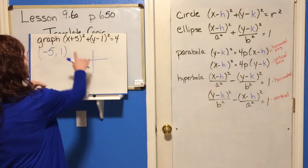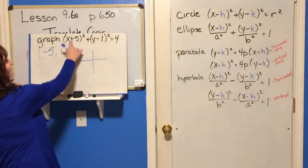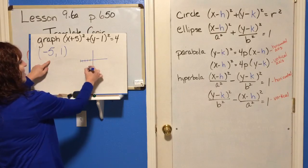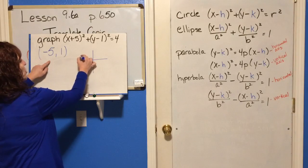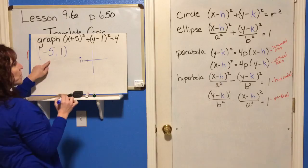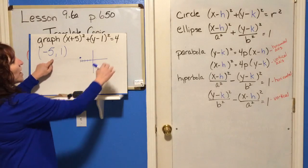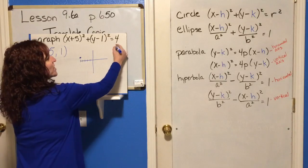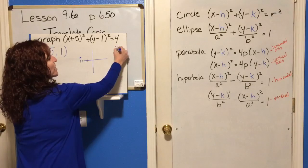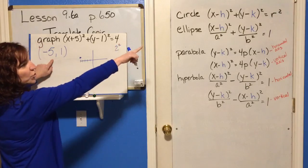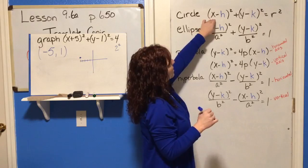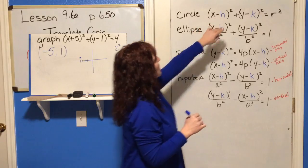Your H and your K are negative, so whatever the sign is in the equation, the coordinate is the opposite. So the center is 5 to the left, 1 up — there's your center. The radius squared is 4, so the radius is 2. Two down, two to the right, two up, and two to the left — and you just graph your circle like that.